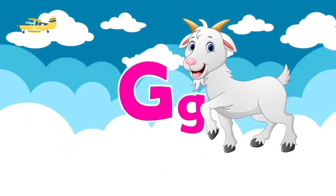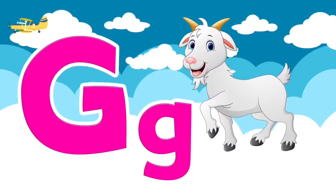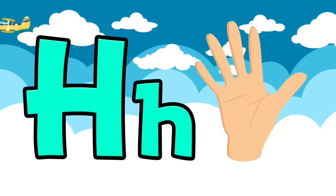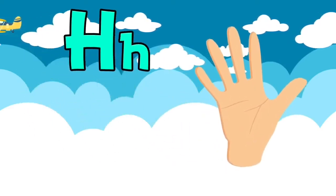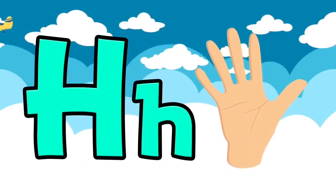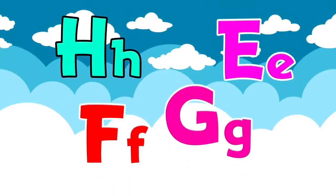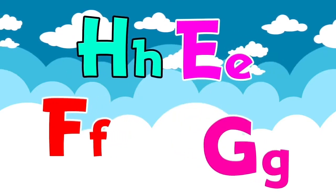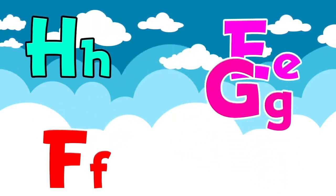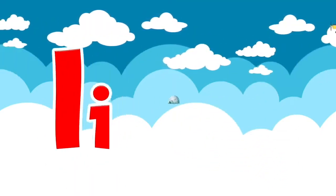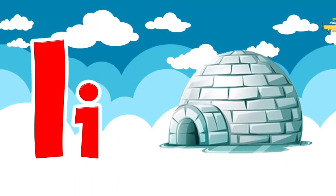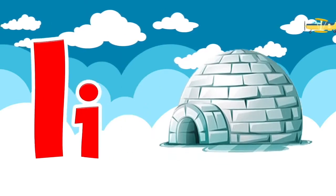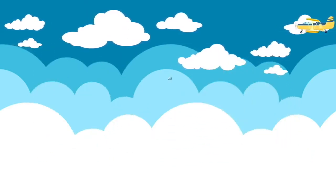G is for goat. G, g. Goat. H is for hand. H, h. Hand. I is for igloo. I, i. Igloo.